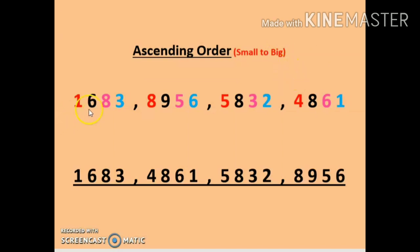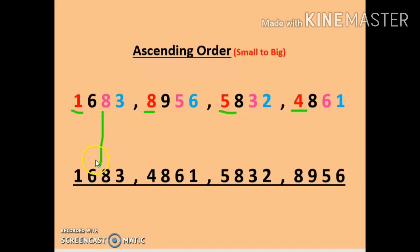Looking at the thousands place, the digits are 1, 8, 5, and 4. Which is the smallest number from these? It's 1.